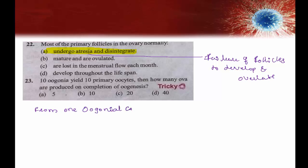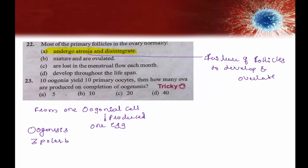From one oogonial cell, only one egg is produced because in oogenesis, the process produces three polar bodies and one egg — a total of four structures, but only one is the actual egg.